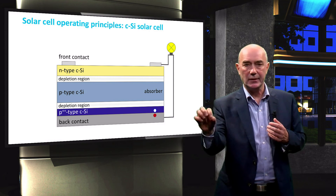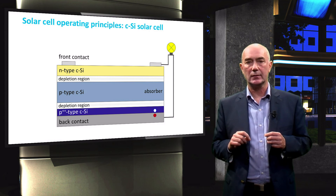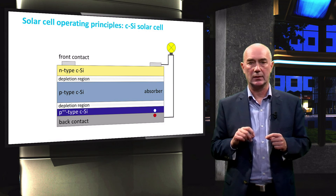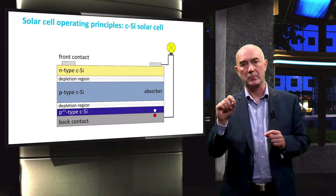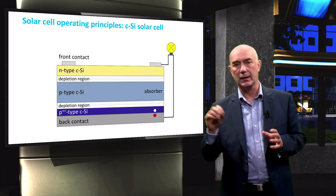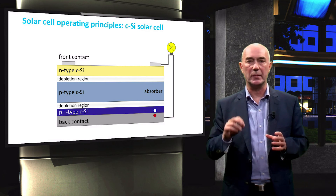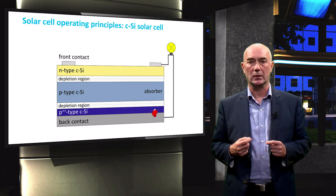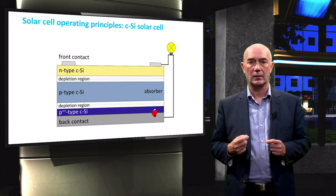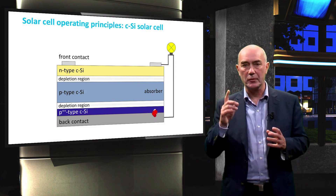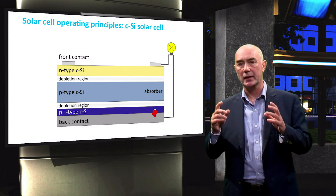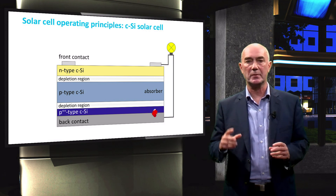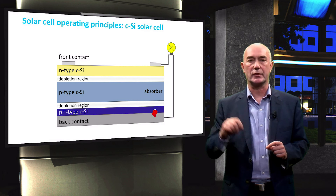The electron enters the back contact, which has a positive potential with respect to the front electrode. At the interface between the back electrode and the heavily doped P-type crystalline silicon, it will recombine with the hole. The flow of electrons through the external circuit and the recombination with holes at the back contact keeps the current flowing through the circuit.